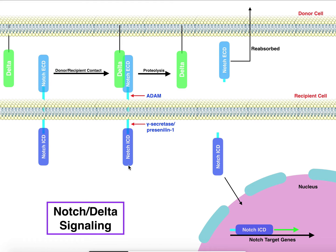When the Notch ICD gets clipped off, it moves into the nucleus of the recipient cell and turns on Notch target genes, producing some biological effect. Again, we're not going to go into those effects because they're too broad and too widespread — we'd be here for a week. But essentially, Notch target genes get turned on.